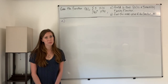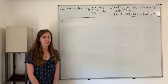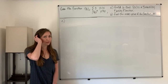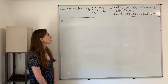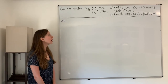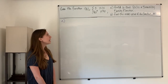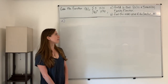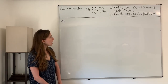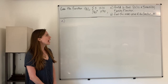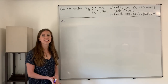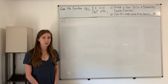In this problem, we're given a piecewise function, and we're asked to do two different things with it. Let's first look at the first part. Our function is zero when x is less than zero, and it's equal to k times e to the negative x when x is greater than or equal to zero. The first part asks us to find the value of k so that f of x is a probability density function.